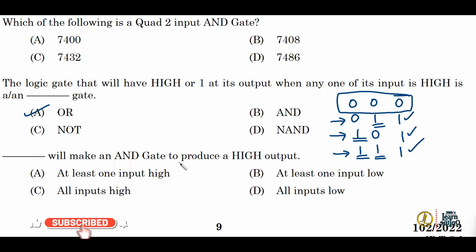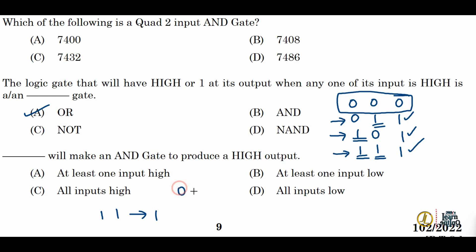Next: what condition will make an AND gate produce a high output? For an AND gate, both inputs must be 1 to produce a 1 output. In all other cases the output is 0: inputs 0·0 give 0, 0·1 gives 0, 1·0 gives 0, and only 1·1 gives 1. So all inputs high makes an AND gate produce a high output. The correct option is option C.